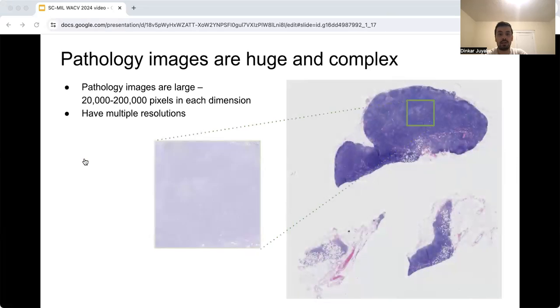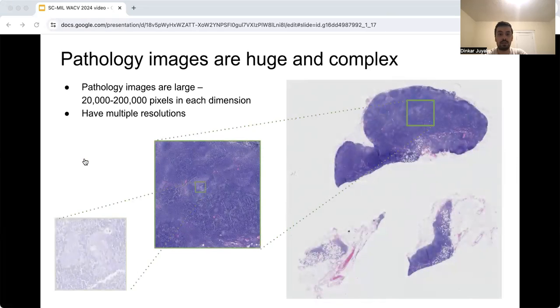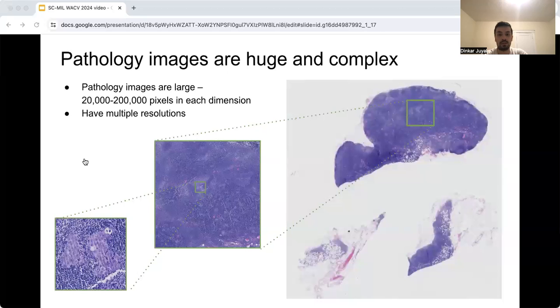This is how the data, that is the whole slide images or WSIs or slides look like. This one is from lymph node with metastatic cancer highlighted in pink. It is tough to score slides because of various reasons. They are massive in resolution, think billions of pixels, with each magnification level containing sometimes very different information. They can also have stain variations which can confound models.